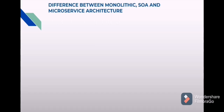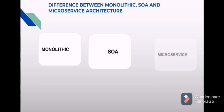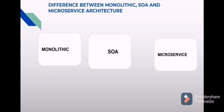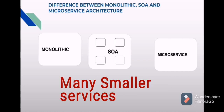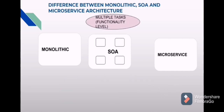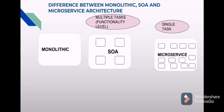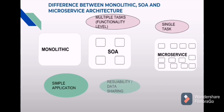Difference between monolithic, service-oriented architecture, and microservice architecture — this is a very important interview question. Monolithic means a single large application where all modules are clubbed together. SOA means dividing this monolithic app into small services, where each service can do multiple tasks at a functionality level. Microservice means dividing SOA services further into smaller, fine-grained services where each service can do only a single task, and these services are independent of each other. Monolithic is used to develop a simple application. SOA is for service reusability or data sharing. Microservices is mainly for independent services.